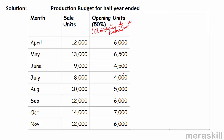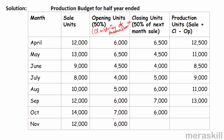The opening inventories are 6, 6.5, 4.5, 4, 5, 6, 7, and 6 thousand units respectively. Closing units are 50% of next month's sales: 9, 8, 5, 6, 7, and 6 thousand. The opening inventory of May is the closing inventory of April; the closing of May is the opening of June; and so on.